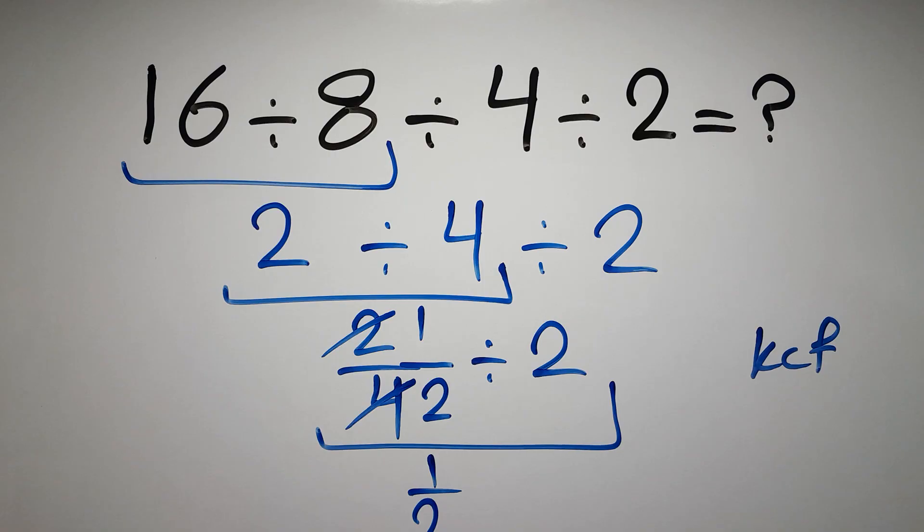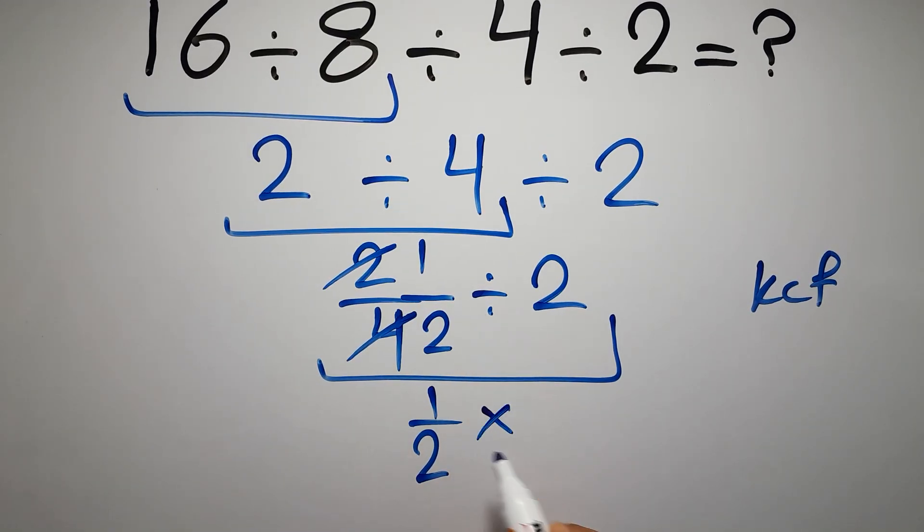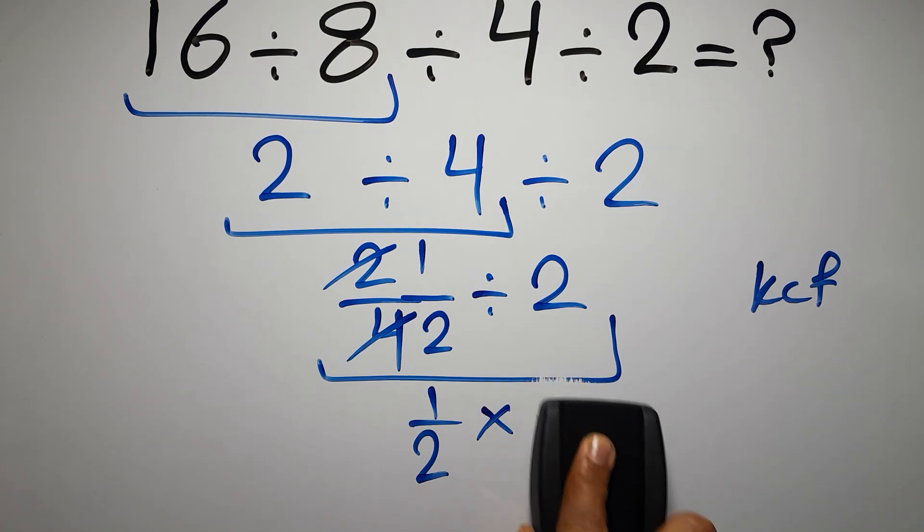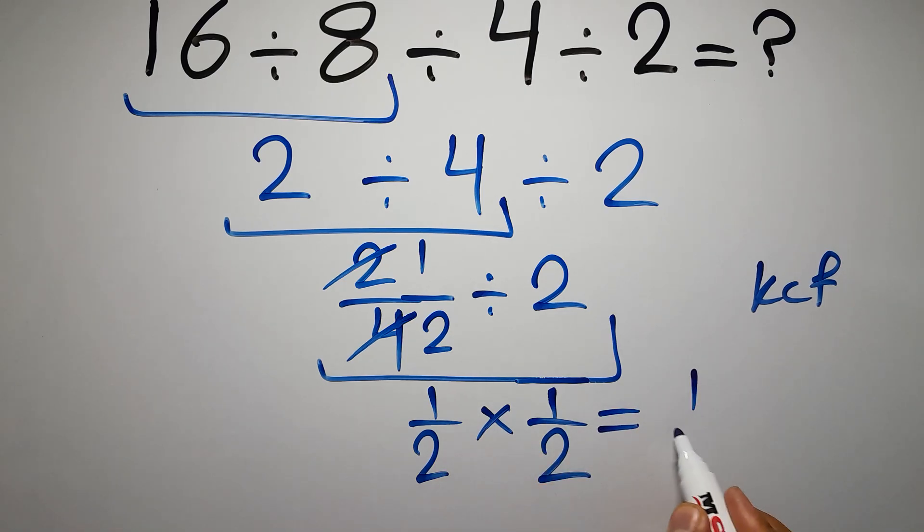1 over 2, change division to multiplication, and flip the second fraction. Here we have 1 over 2, so 1 over 2 times 1 over 2, which equals 1 over 2. 1 times 1 gives us 1.